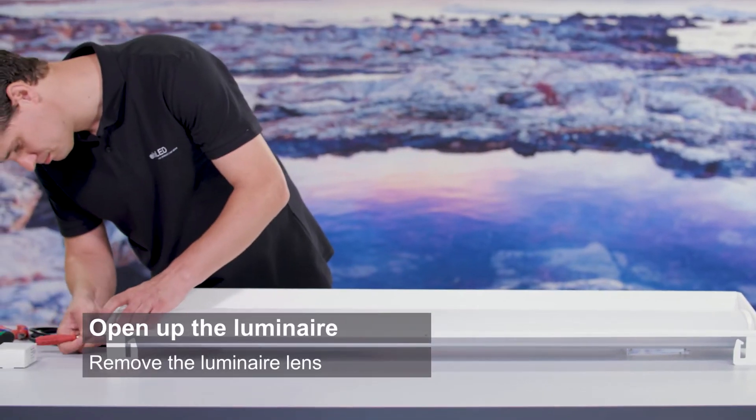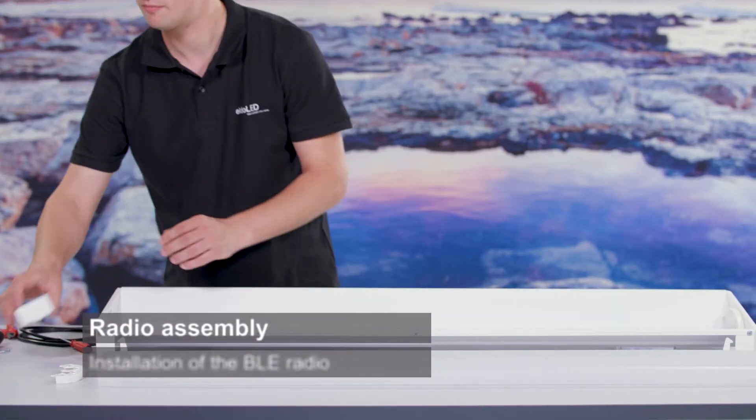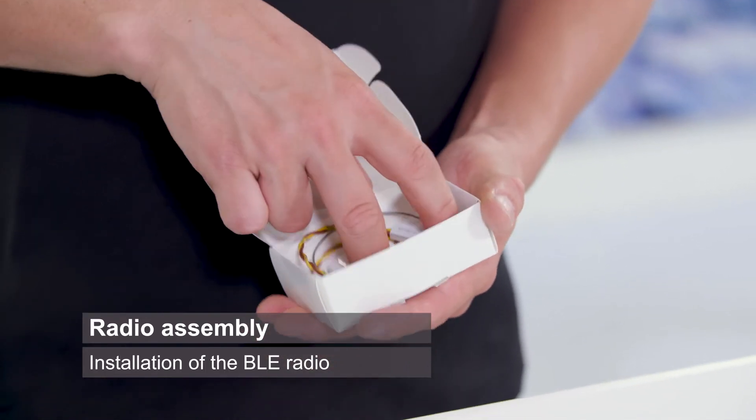Remove the optics from the luminaire to get access to the LED boards inside. Unpack the LEDCODE BLE radio with remote antenna.